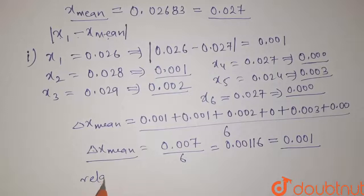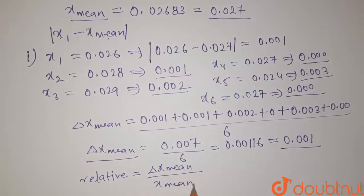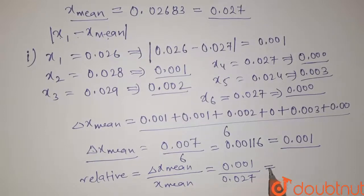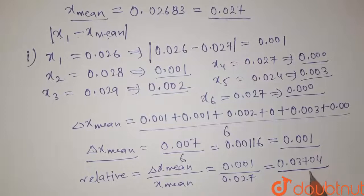Now we have to find the relative error. The relative error is given by the mean absolute error divided by the mean value. Here it will be 0.001 divided by 0.027, which gives 0.03704. So this is the value of the relative error. That's our solution.